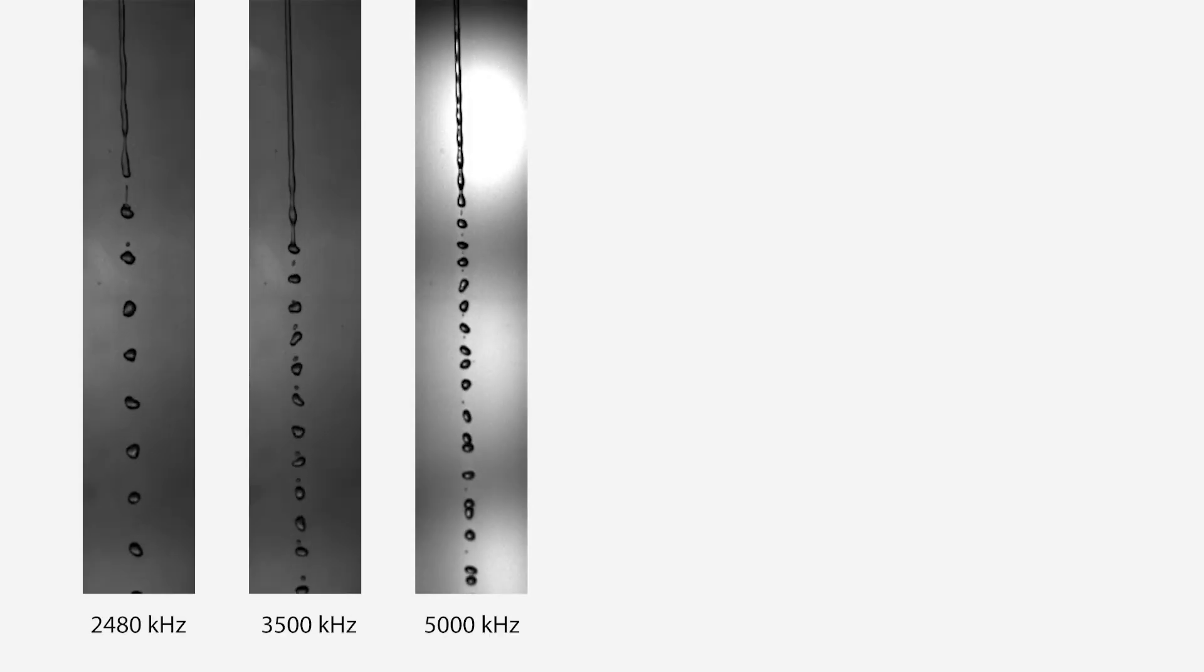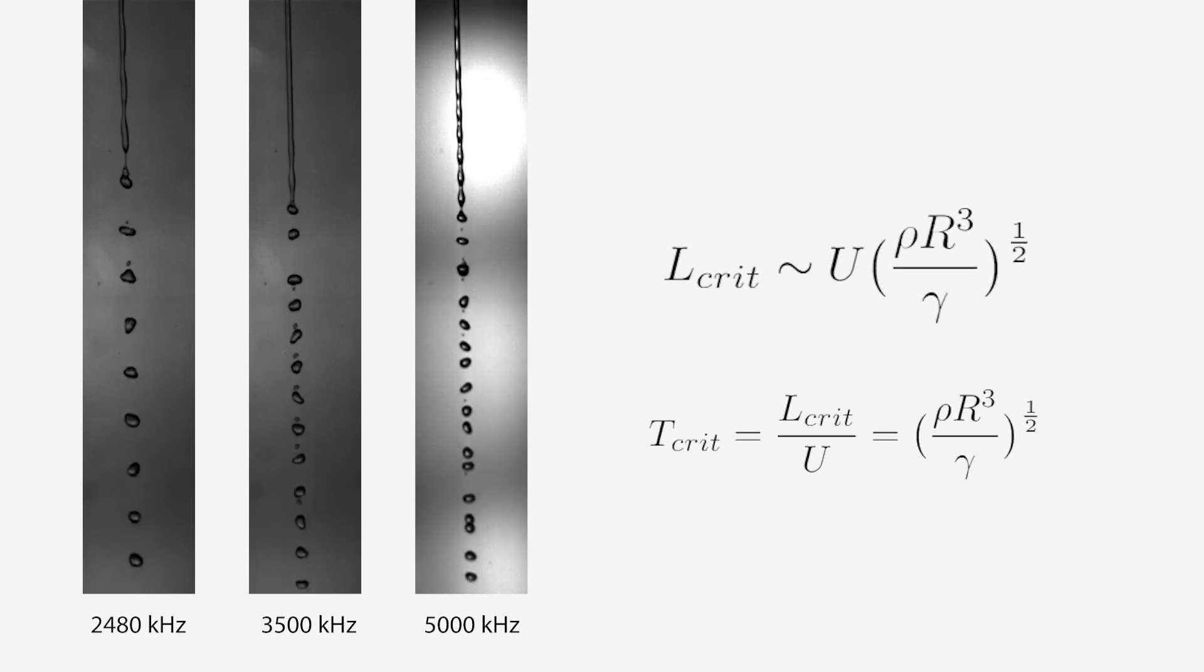The critical time can be thought of as a good indication of the competition between surface tension and inertial energy. Higher inertial energy makes the stream less susceptible to instabilities, while surface tension increases the instability. A low critical time indicates high surface tension compared to inertial energy, while a high critical time indicates low surface tension compared to inertial energy.